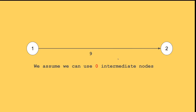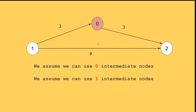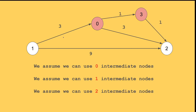So I started with no intermediate node and went directly, then allowed one intermediate node and updated the distance to 6, then two nodes and updated to 5. In the extreme, if you're allowed to use all n nodes as intermediate nodes, repeating this from 0 to 1 to 2 up to n, the shortest path at the end should be the actual shortest path between 1 and 2.